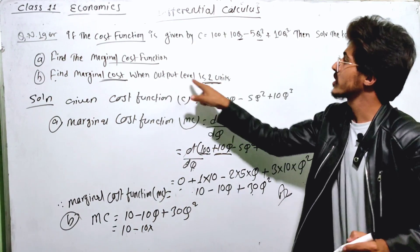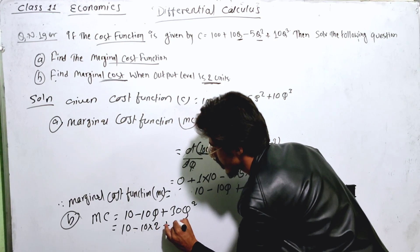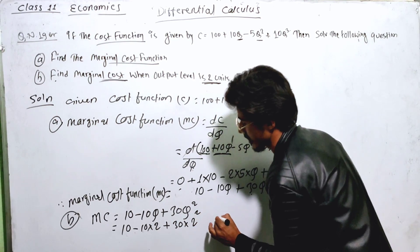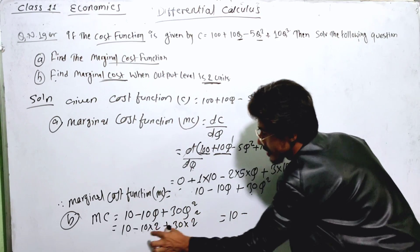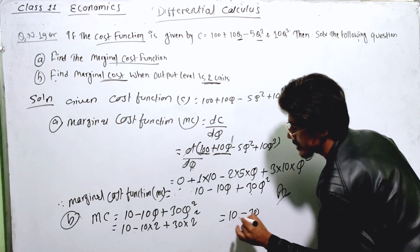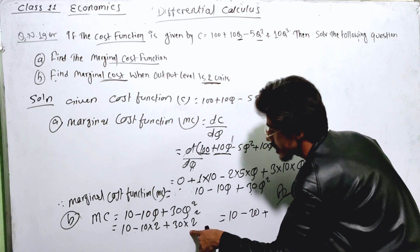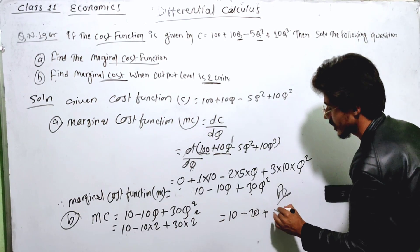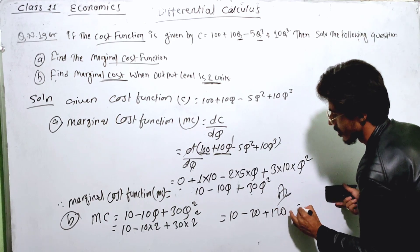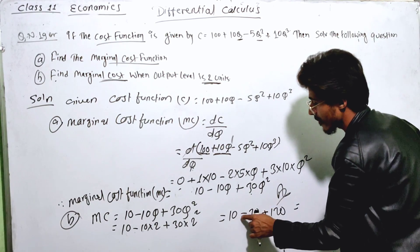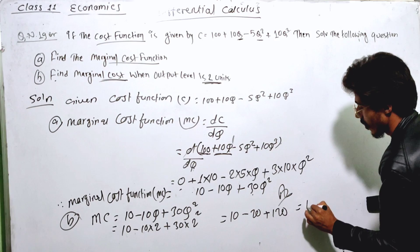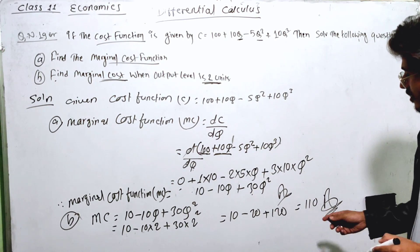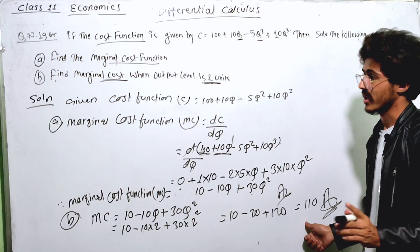Substituting Q equal to 2: MC equals 10 minus 10 into 2 plus 30 into 2 squared. That is 10 minus 20 plus 30 into 4, which is 10 minus 20 plus 120, giving 110. Therefore the marginal cost when output level is 2 units equals 110.